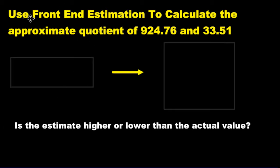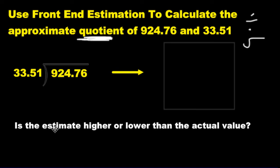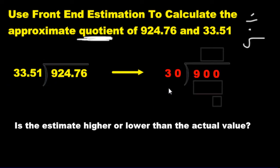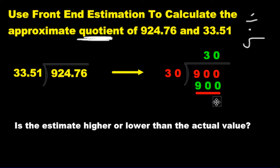The last question: use front end estimation to calculate the approximate quotient — quotient means divide. We're going to convert both numbers. Then we ask ourselves: 30 goes into 900 how many times? If you count by 30s until you get to 900, it's going to be 30 times. Because 3 times 3 is 9 — add the two zeros, you get 900. Minus zero. So it's going to be about 30. If you divide these two numbers, you're going to get pretty close to 30.